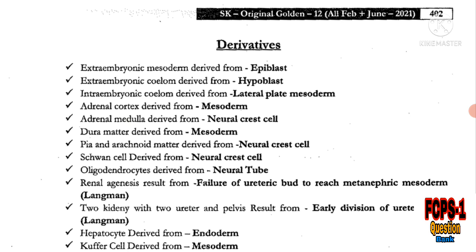Adrenal cortex is derived from mesoderm, and adrenal medulla is derived from neural crest cells. Dura mater is derived from mesoderm, while pia mater and arachnoid mater are derived from neural crest cells. So among the meninges, dura mater is from mesoderm and pia and arachnoid are from neural crest cells.